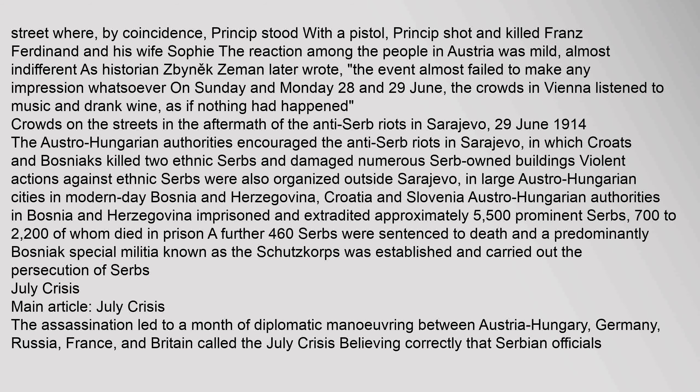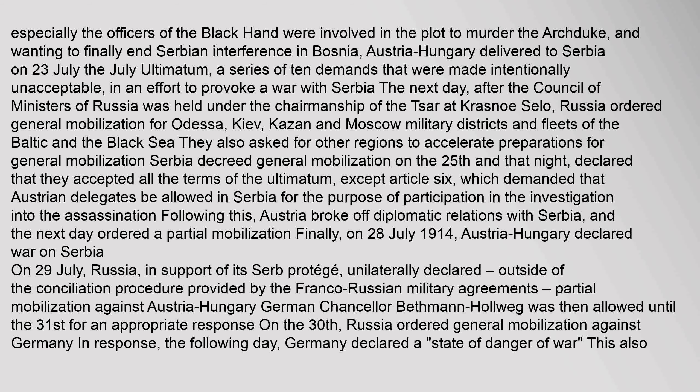The assassination led to a month of diplomatic maneuvering between Austria-Hungary, Germany, Russia, France, and Britain, called the July Crisis. Believing correctly that Serbian officials — especially the officers of the Black Hand — were involved in the plot to murder the Archduke, and wanting to finally end Serbian interference in Bosnia, Austria-Hungary delivered to Serbia on 23 July the July Ultimatum, a series of ten demands that were made intentionally unacceptable, in an effort to provoke a war with Serbia.